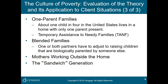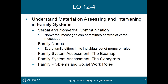Many middle-aged adults are sandwiched between two generations — their parents and their children. This puts great demands and pressures on them. Because older adults are the fastest-growing age group in our society, an increasing proportion of middle-aged adults will find themselves providing care for their parents as well as their children. Some middle-aged adults have their children and a parent or two living with them, and people find it difficult to find time and resources to respond to the needs and demands of their work, their children, and their parents. Learning Objective Four is to understand material on assessing and intervening in family systems.